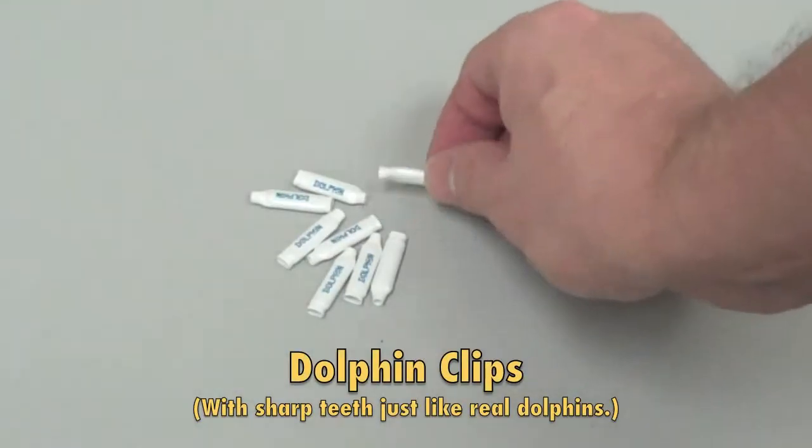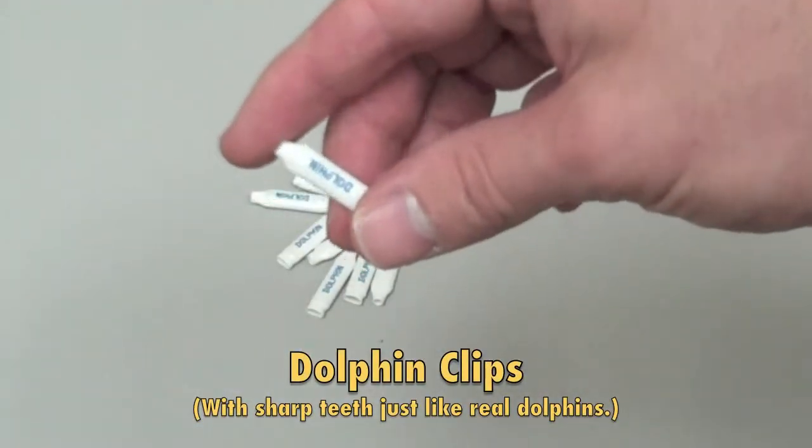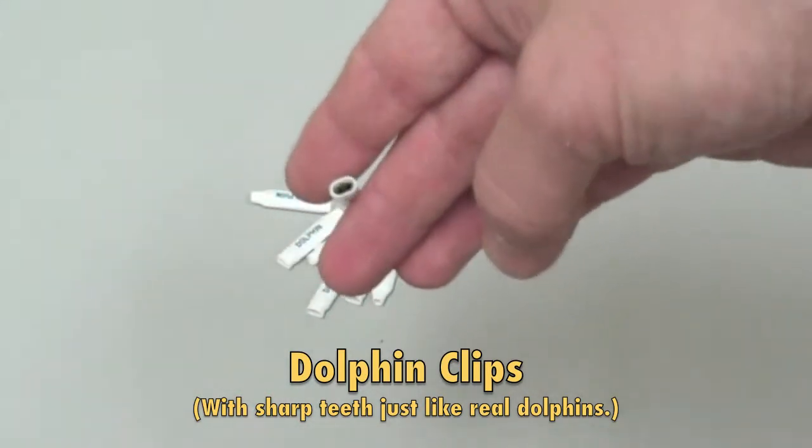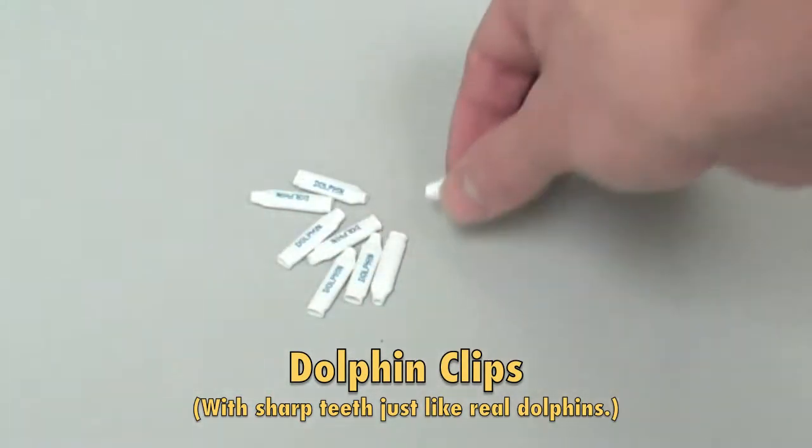First, let's cover what we need. These are called dolphin clips. On one side, they're open so that you can measure your wires once you've connected them. The other side, the wires go into, and you crimp them down to make a nice, tight connection.